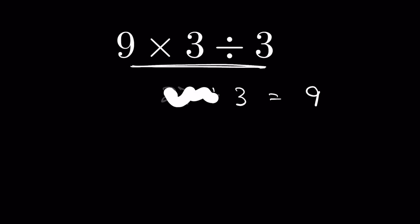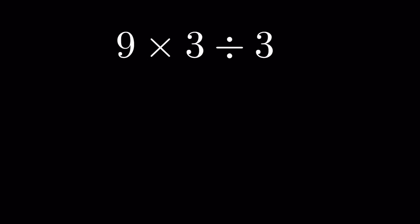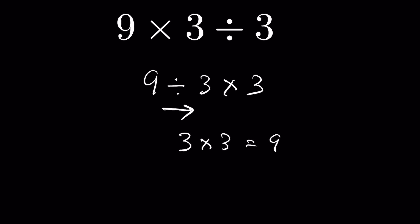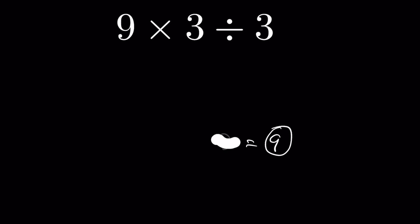Don't get confused — even in those cases, stick to the rules. When the signs change it makes a difference. Take 9 divided by 3 then times 3. If you wrongly do multiplication first: 3 times 3 is 9, then 9 divided by 9 equals 1. But if you stick to the left-to-right rule, division comes first: 9 divided by 3 is 3, then 3 times 3 is 9. There is a difference, so never forget the rules.